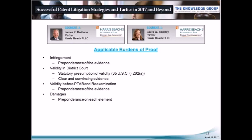The burden of proof on the issue of validity shifts when you're before either the Patent Trial and Appeal Board or in Patent Reexamination Proceedings. The standard for inter partes review, post-grant review, or reexamination is a preponderance of the evidence. Other issues for which the burden of proof is relevant during trial include damages, where a preponderance of the evidence must be shown on each element of damages, such as lost profits or price erosion.